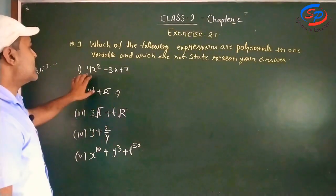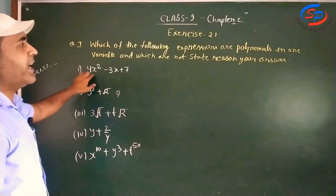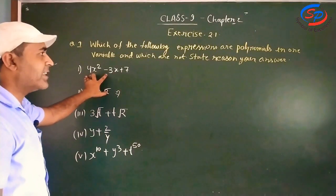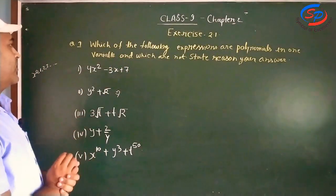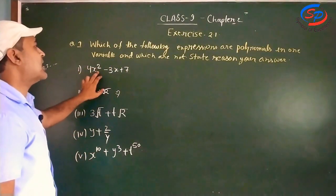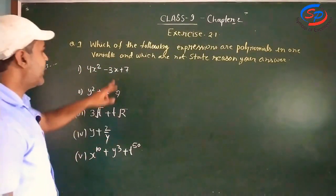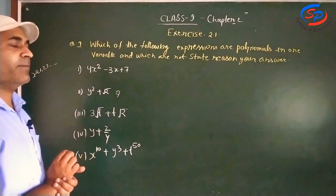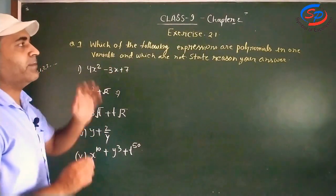The first question is: 4x squared minus 3x plus 7. Here we have x to the power 2 and x to the power 1, so these exponents are whole numbers.